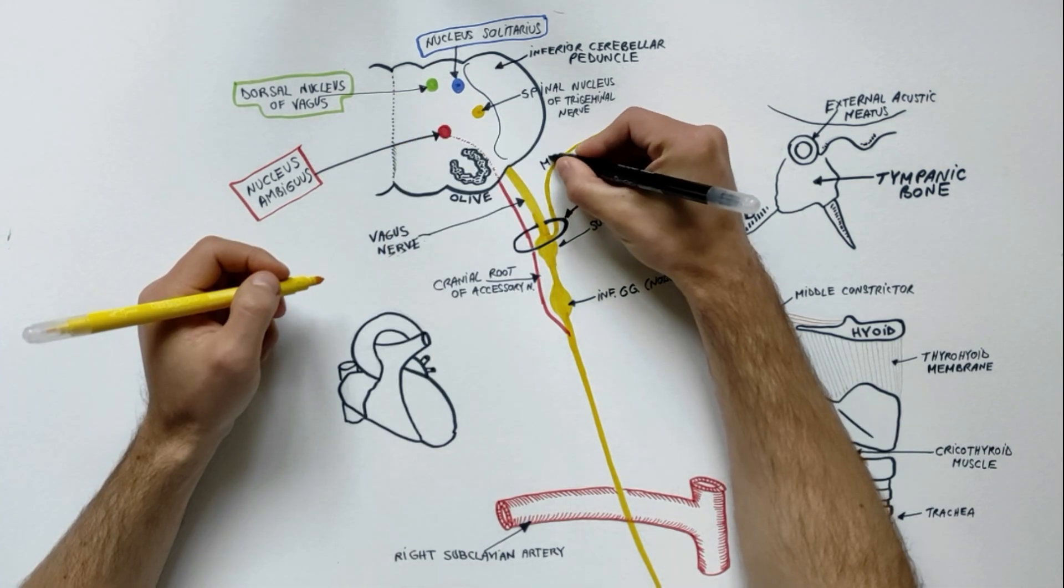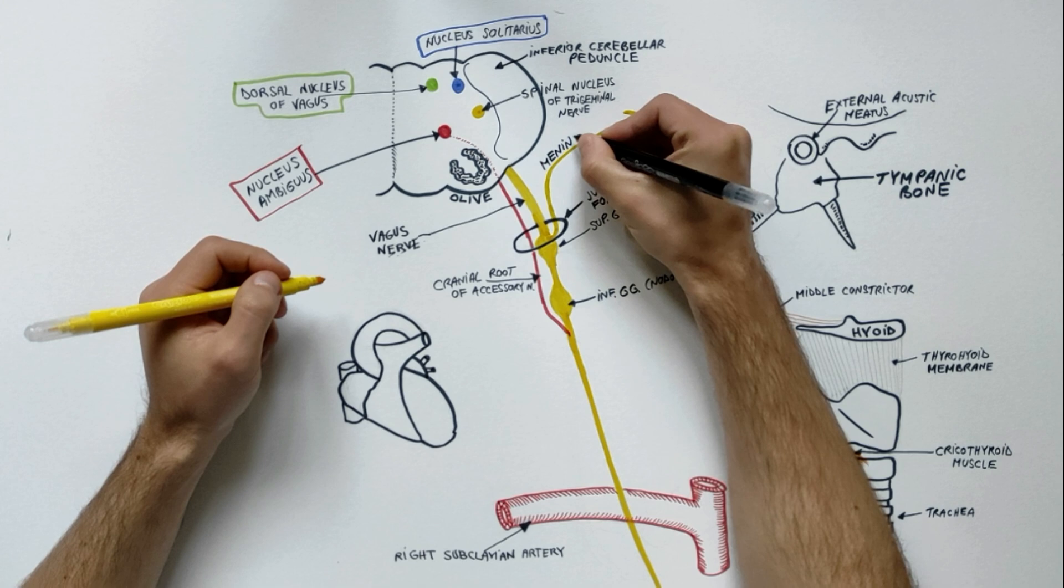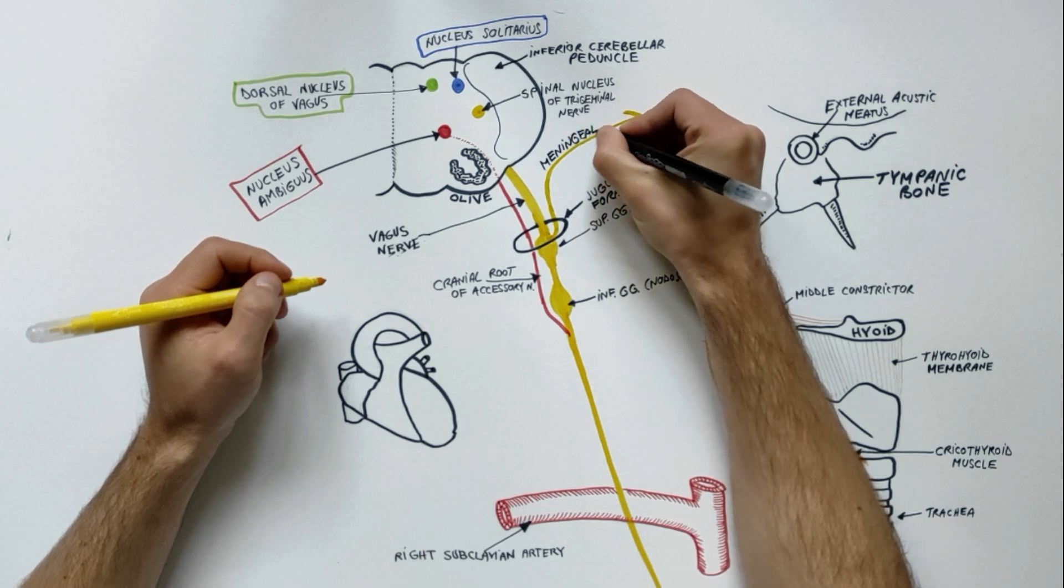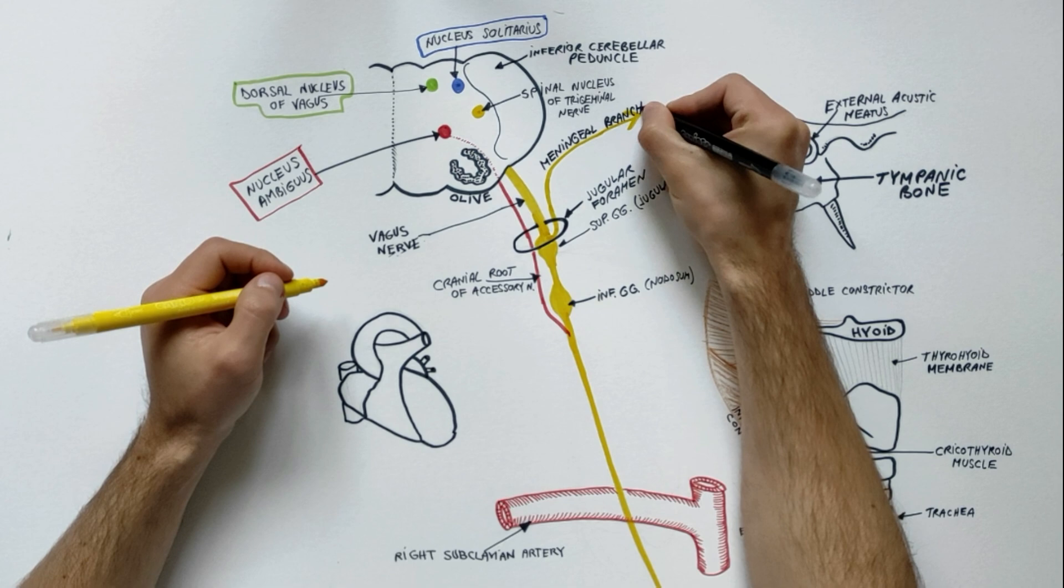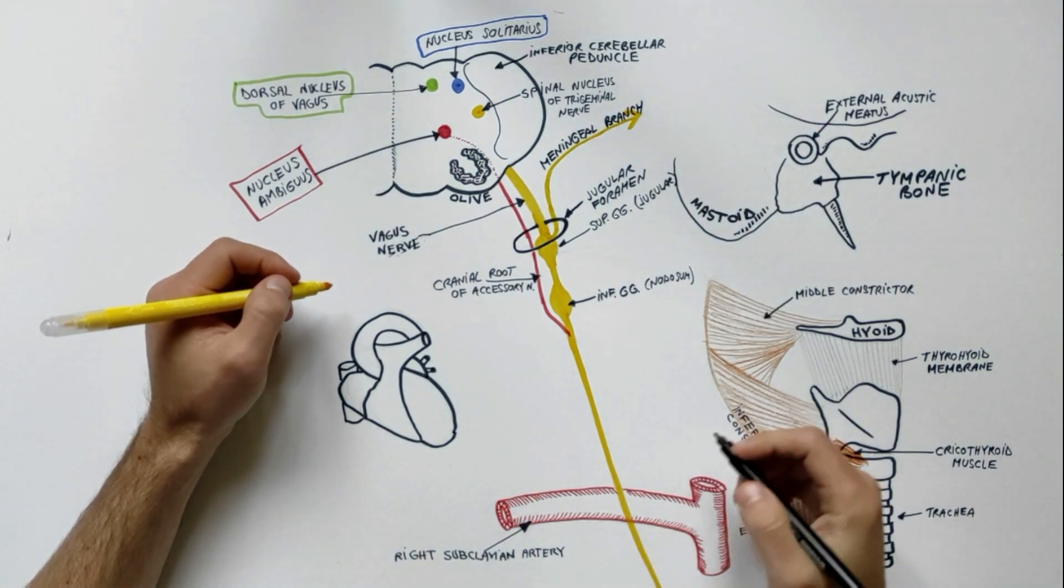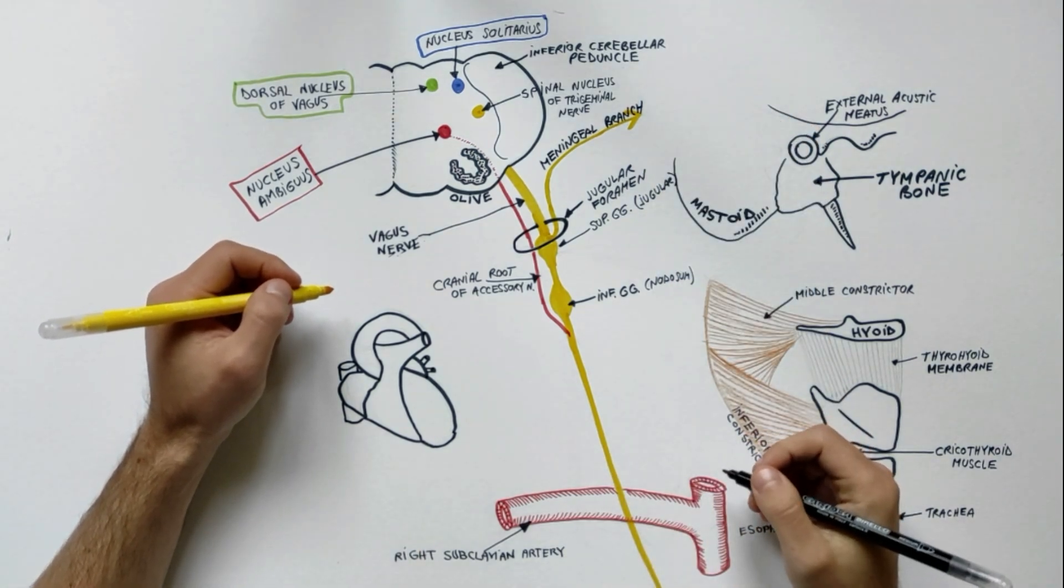Its meningeal branch arises from the superior ganglion, takes a recurrent course and enters the cranial cavity through the jugular foramen to supply the dura mater of the posterior cranial fossa.